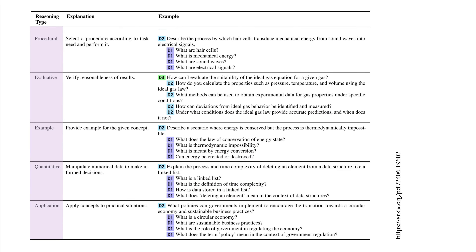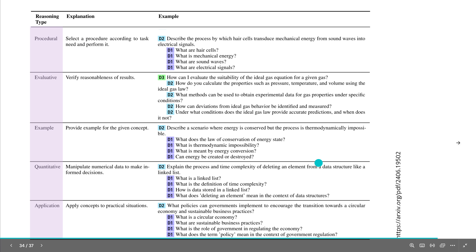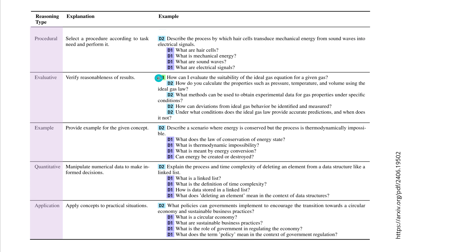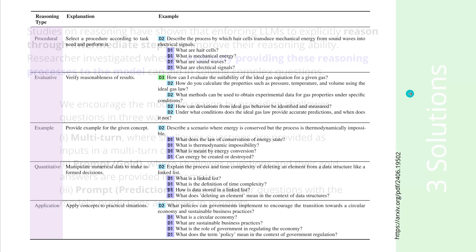Here we have reasoning type examples — quantitative and application. For example, a D3 level question: how can I evaluate the suitability of the ideal gas equation for a given gas? D2: how do you calculate properties such as pressure, temperature, and volume using the gas law? And what methods can be used to obtain experimental data for those properties? All these examples test and probe the LLM so we can understand what are the strong points of a particular LLM, on what data it has been trained, what patterns it learned, and what it is able to reproduce.